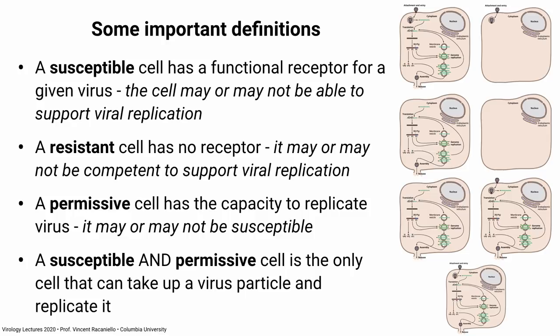Susceptible cells: when we talk about susceptible cells, what I mean is the cell has a receptor for the virus — the virus can bind to it. That's all it means. Many other people say a cell is susceptible to infection and mean much more, but for this course, susceptible means has a receptor. The cell may or may not be able to support virus replication. So a cell can be susceptible but still not produce more virus particles if there's something incompatible inside the cell.